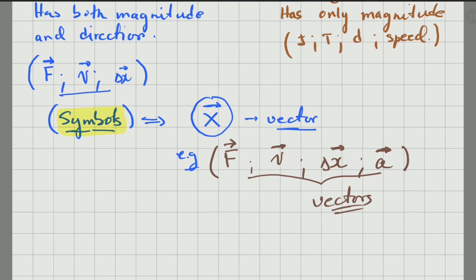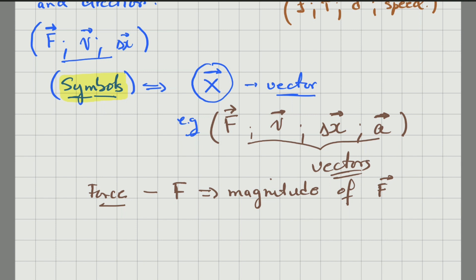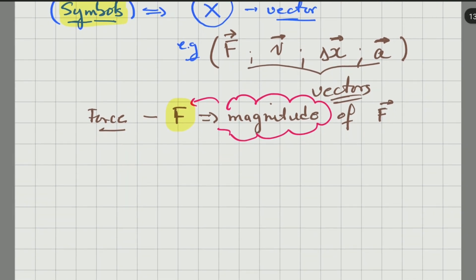If you have, for example, force represented as just F without the arrow on top, it means you are referring to the magnitude of the force — but in this case, no direction, because we are referring to the magnitude only. Please keep that in mind: if you write the symbol without the arrow on top, it means it's the magnitude of that specific physical quantity. This is not new — it was done in previous grades.